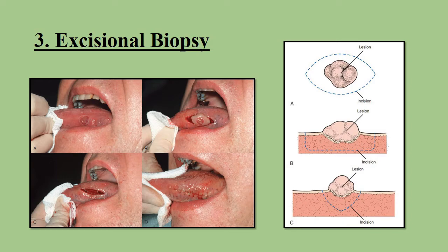Another type is excisional biopsy — that means removal of all the lesion with about 2-3 mm of normal tissue around it. It is used for small lesions with suspected malignancy or pigmented lesions.